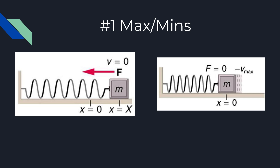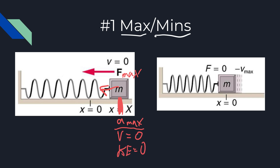Question number one should be no surprise if you're in my class currently — determining the max/mins at the extreme points. At maximum displacement, the force is going to be a maximum because the spring is pulling back very strongly. Acceleration is a maximum because force and acceleration are directly proportional. Velocity is zero — it temporarily stops at that location. Kinetic energy is also zero because it's not moving. And spring potential energy, one-half kx squared, is a maximum because x is at a maximum.